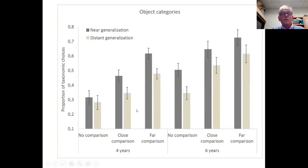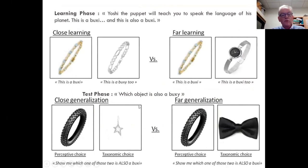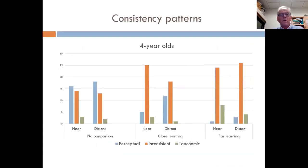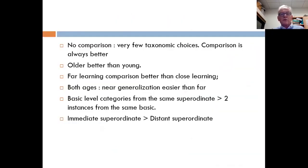Far learning led to better performance than close comparison, which might explain why at some point taxonomic categorization is more difficult, and different types of taxonomic categorization in terms of level might be more difficult than others.